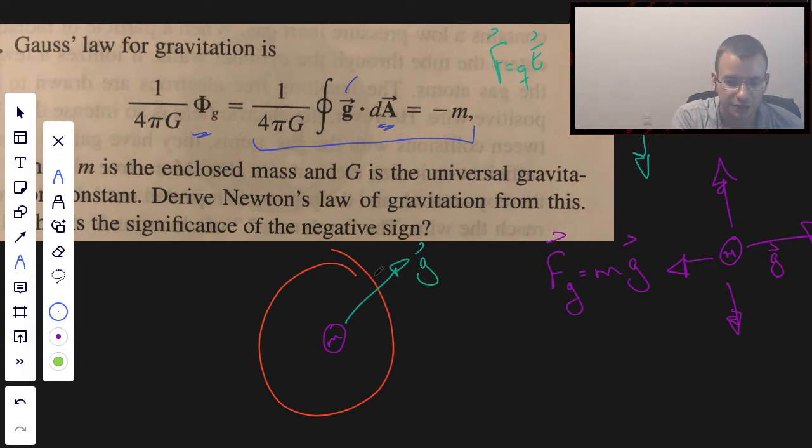The dA, the surface vector, is going to be perpendicular to the surface, normal to the surface. It's going to point out this way. So this will be dA going out that way.